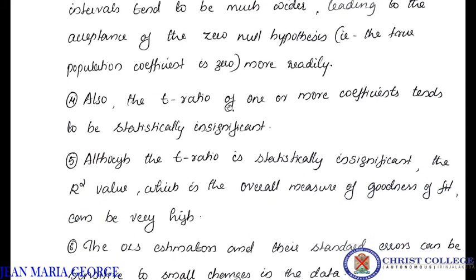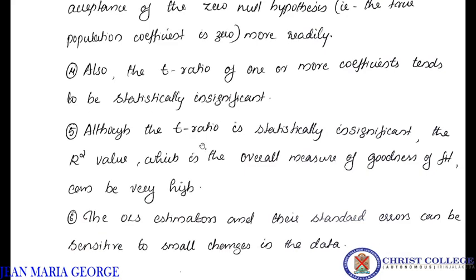The fourth practical consequence is that the T-ratio will be statistically insignificant. If we test the T-ratio, it is statistically insignificant. However, the coefficient of determination, the R-squared value, will be higher — if we test R-squared, we can measure goodness of fit and that R-squared value is high, while the T-ratio remains insignificant.